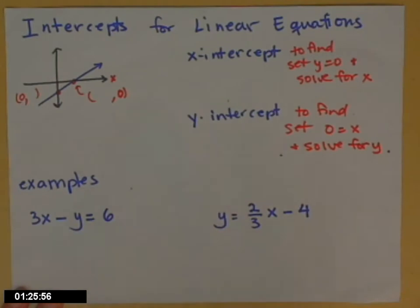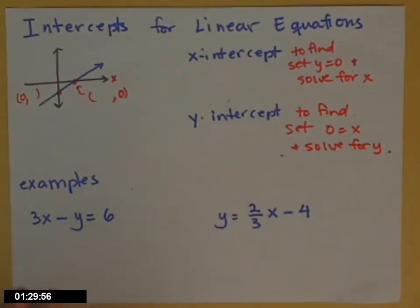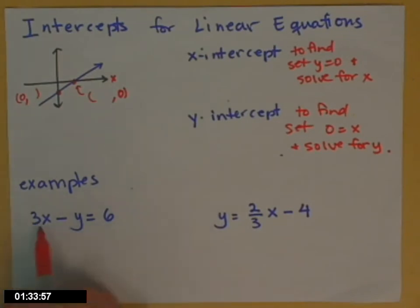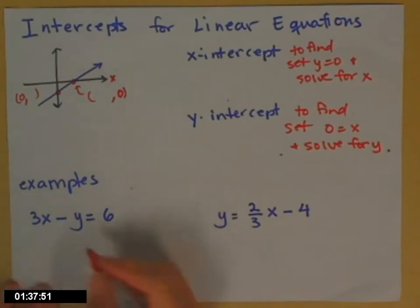Of course, if you have a graph that's labeled, and you can just read them off, then you could go that way. So here are two examples. We can practice finding our x and y-intercepts. So the first line, 3x minus y equals 6. So let's start by finding the x-intercept.